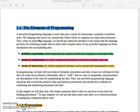A powerful programming language is more than just a means for instructing a computer to perform tasks. The language also serves as a framework within which we organize our ideas about processes. Thus, when we describe a language, we should pay particular attention to the means that the language provides for combining simple ideas to form more complex ideas. Every powerful language has three mechanisms for accomplishing this.